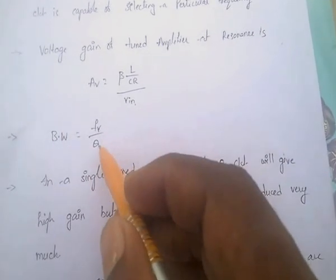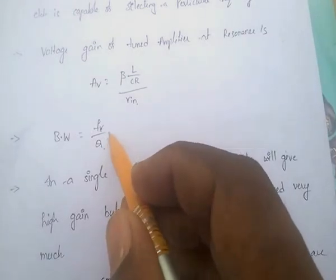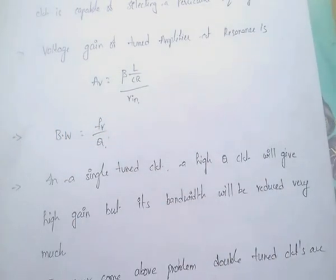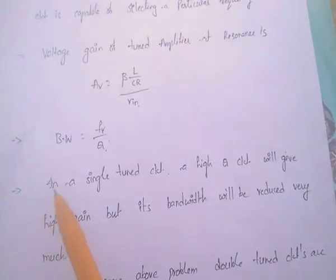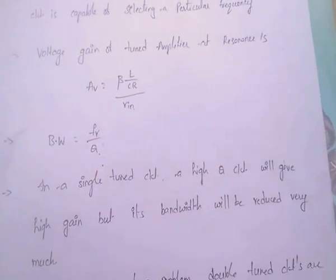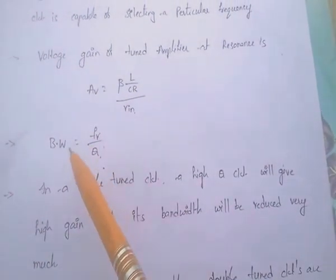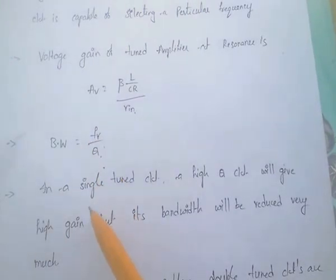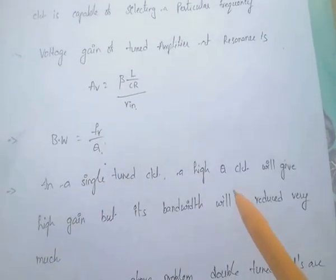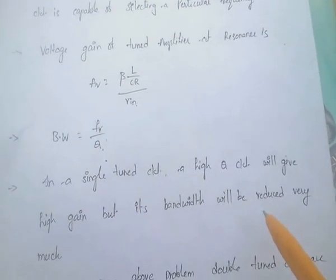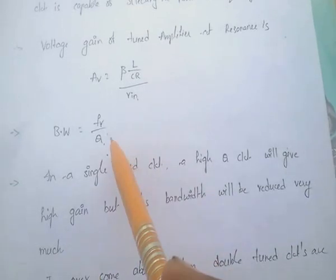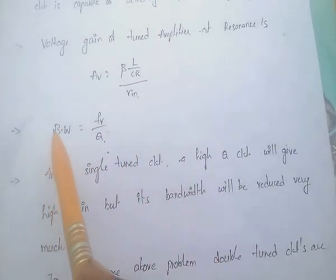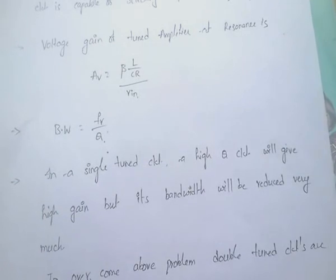But if the Q value is high, the bandwidth value will be low. So in a single tuned circuit, it has a high Q and will give high gain, but the bandwidth value will be low.